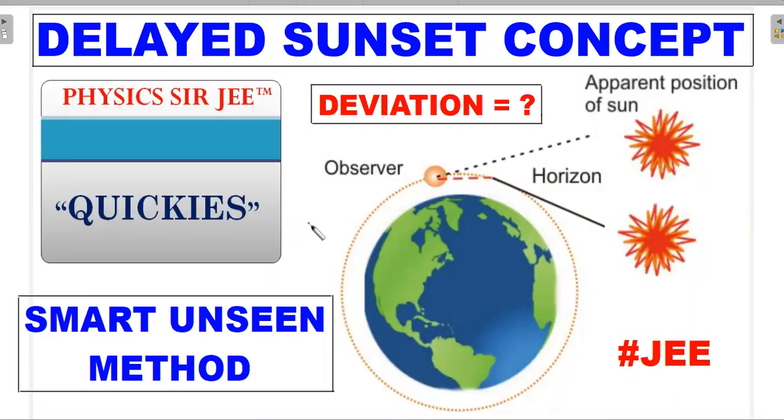Welcome back to Physics Surgery Quickies. I've brought forward an interesting concept of delayed sunset or advanced sunrise. You can actually reverse the two concepts in situations where light gets refracted from the atmosphere of a planet, in this case Earth.